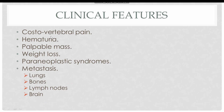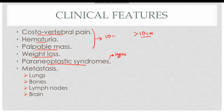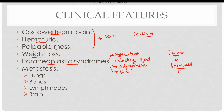Renal cell carcinoma presents with atypical symptoms such as costovertebral pain, hematuria, and a palpable mass in the abdomen. All three features are present in only about 10 percent of cases when the tumor size is greater than 10 centimeters. There is also history of weight loss due to increased metabolism. Renal cell carcinoma also presents with paraneoplastic syndromes such as hypercalcemia, Cushing syndrome, polycythemia, and hypertension — meaning the tumor secretes hormones that perform normal bodily functions alongside the normal glands.